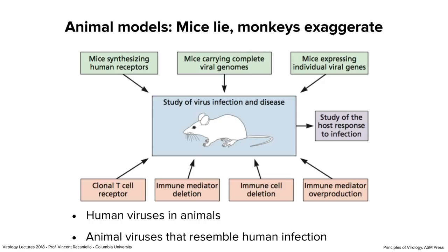In terms of the virus, some human viruses will replicate in mice or other animals, but others simply will not. HIV is a good example — it doesn't replicate at all in mice. If you can't get your virus to replicate in animals, you can sometimes find an animal virus that will infect mice and resembles a human infection. Alternatively, if you passage a human virus multiple times through mice, you can achieve mouse adaptation — the virus acquires mutations that allow it to replicate in mice.